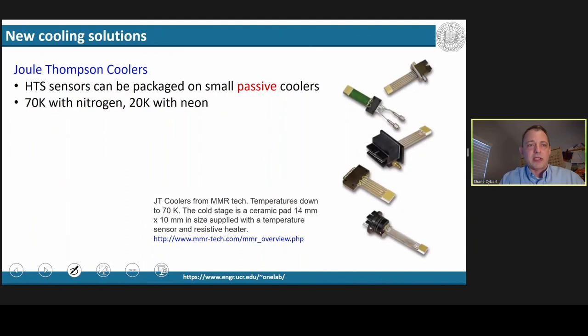One could be Joule-Thompson coolers, such as the ones that I show here from MMR Tech. Using these sensors with liquid nitrogen, you could hit 70 Kelvin, whereas with neon, it would be 20 Kelvin.